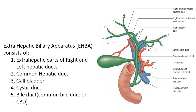The EHBA consists of the extrahepatic parts of the left and right hepatic ducts, the common hepatic duct from the union of left and right hepatic ducts up to the union of the cystic duct with it, the gallbladder and the cystic duct connecting the gallbladder to the common hepatic duct, and finally the common bile duct — the part of the duct distal to the union with the cystic duct.